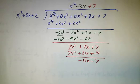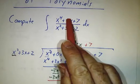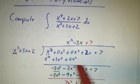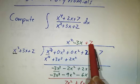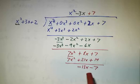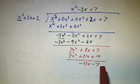So what we've just done is we've said that this fraction here is x squared minus 3x plus 7, and the remainder of negative 13x minus 7.